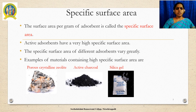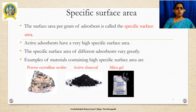Specific surface area is defined as the surface area per gram of adsorbent. If the specific surface area is very high for an adsorbent, that adsorbent becomes an active adsorbent. The specific surface area of different adsorbents varies greatly, depending on the nature of the adsorbent. Examples of adsorbents having very high surface area are crystalline zeolite, activated charcoal, and silica gel.